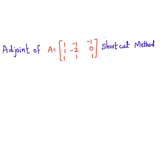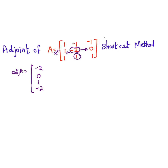Adjoint of A, where A is [[-1,1,1],[1,-2,0],[1,1,1]], shortcut method. How to find the adjoint of A using the shortcut method: you will take the center element of the center row, which is minus 2, then go to the right side — it is 0 — then go to the left side element, 1. Again go to the center, minus 2, then go to the last row.